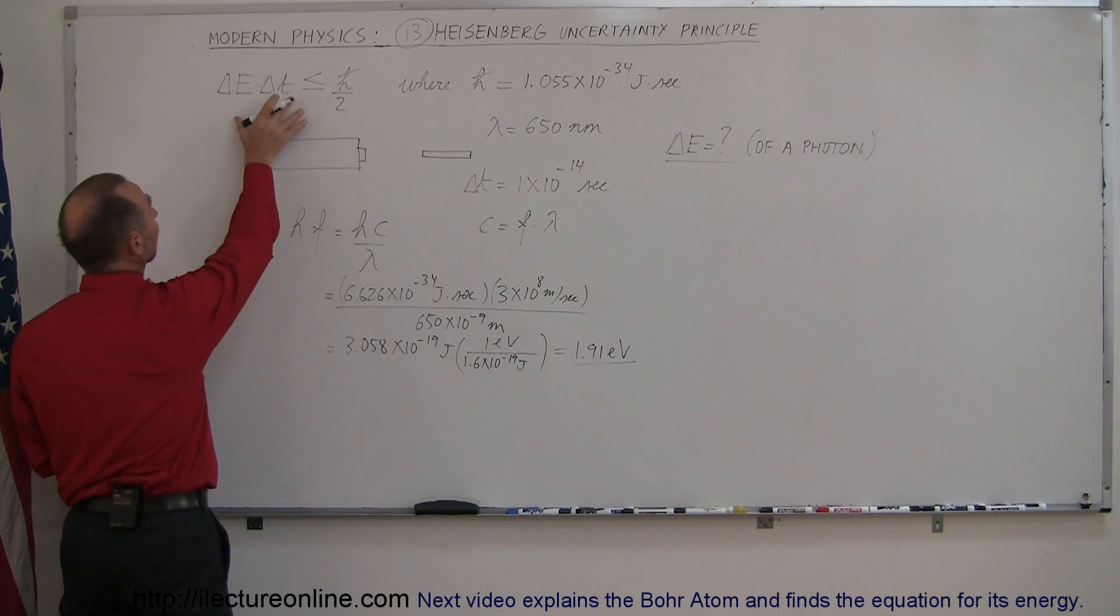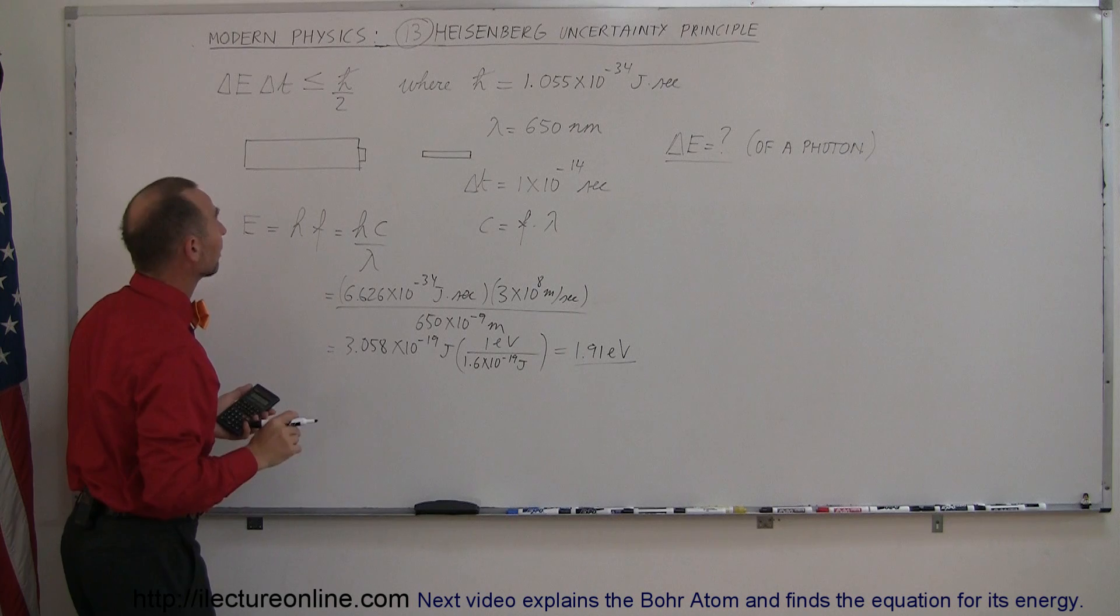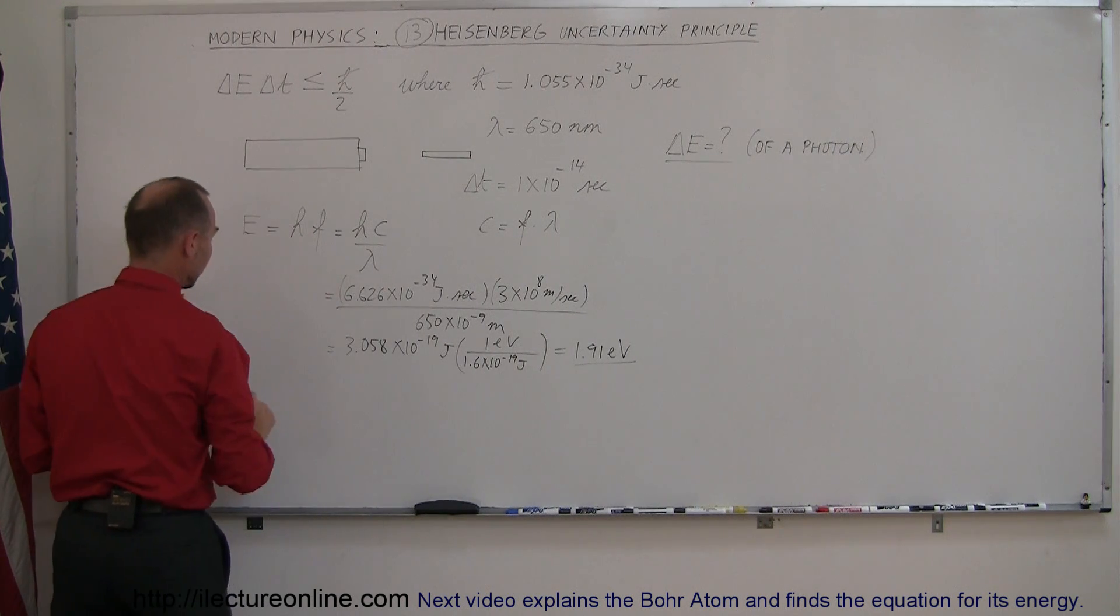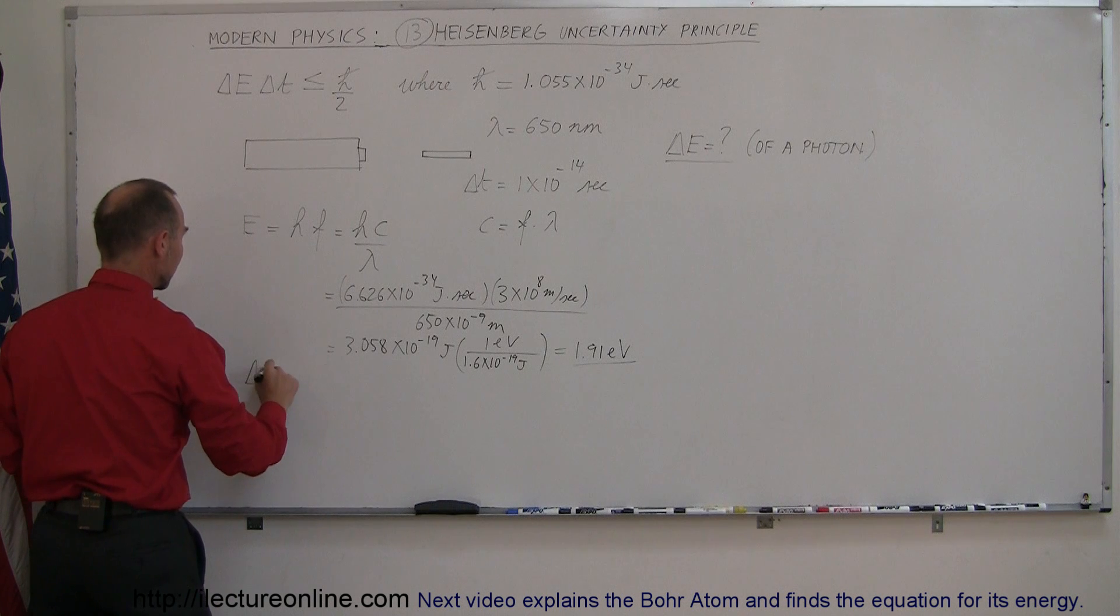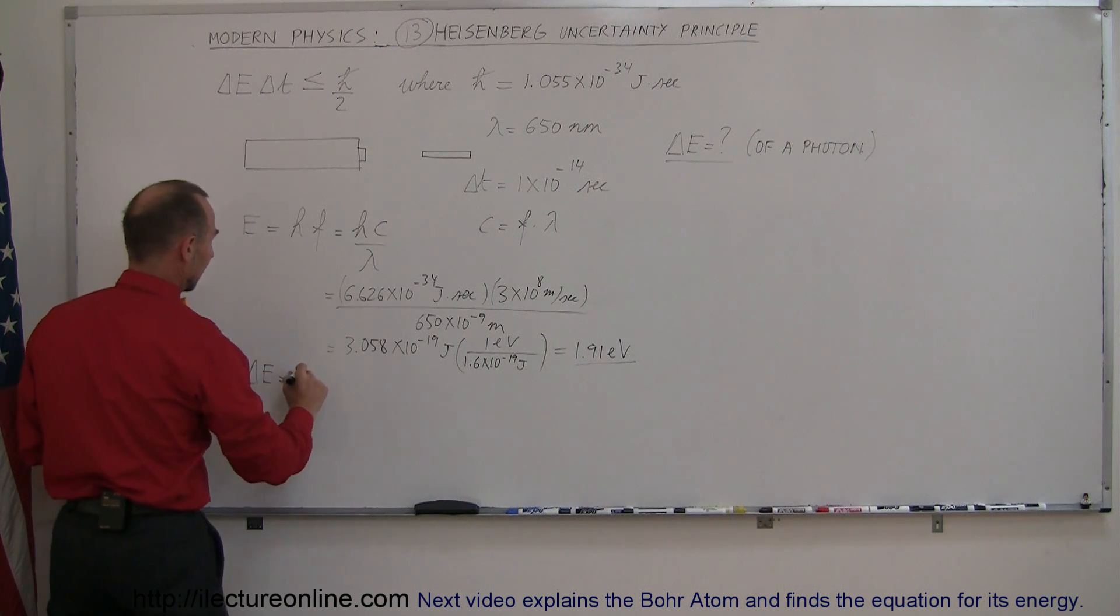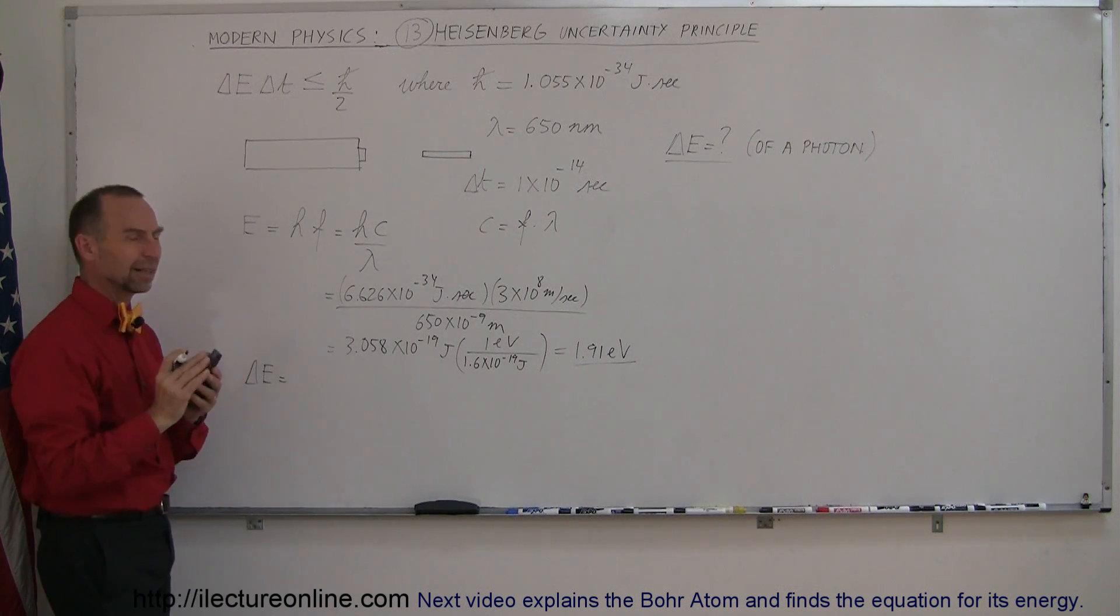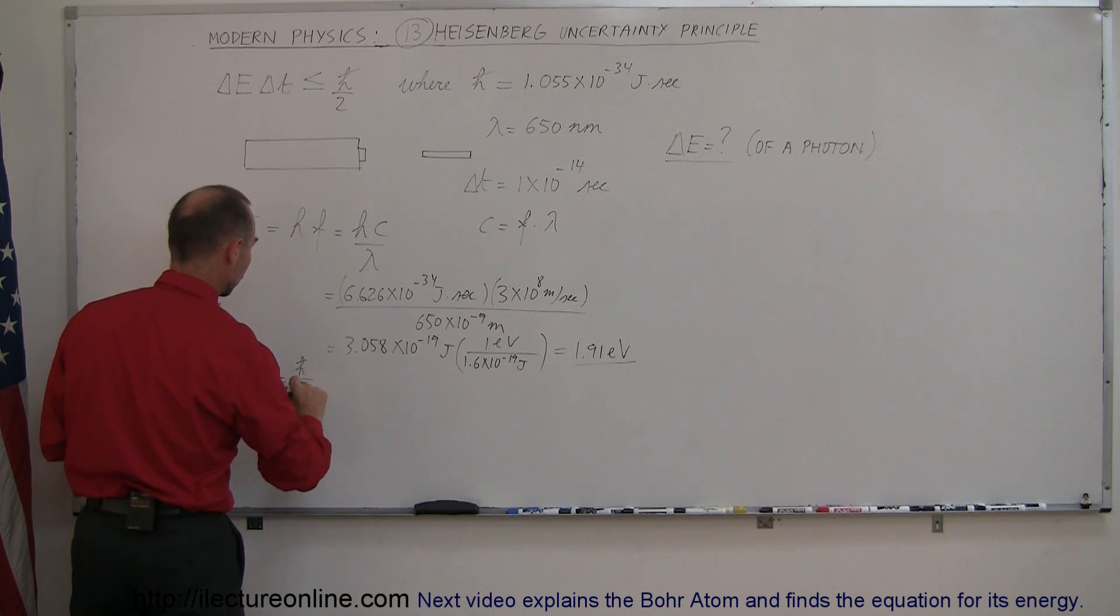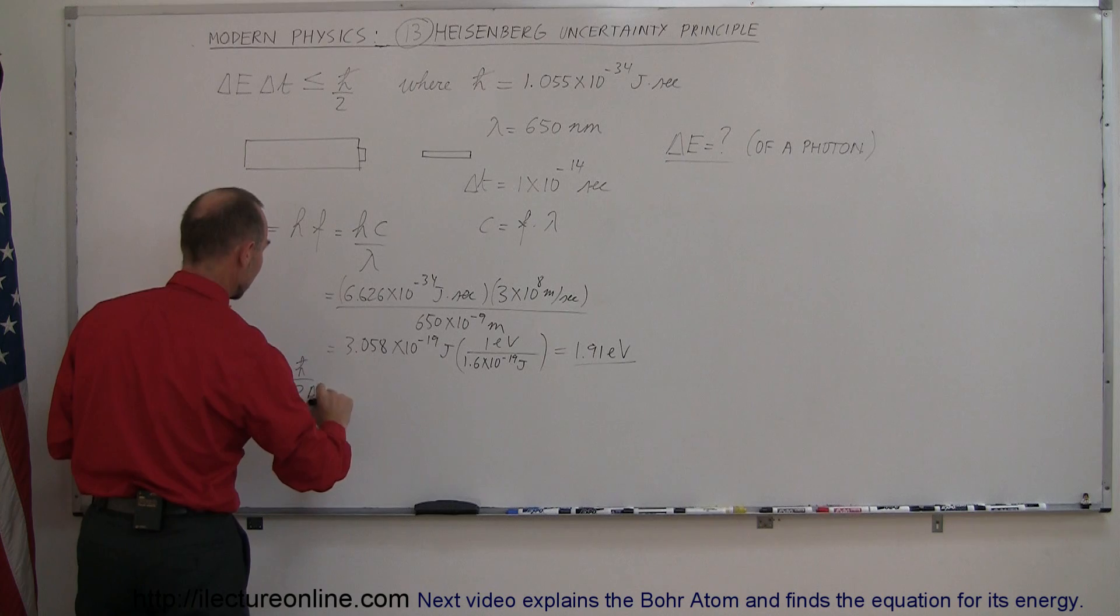And so using the Heisenberg uncertainty principle equation for energy and time, let's solve for the uncertainty in the energy. We can say that the uncertainty in the energy is equal to ℏ over 2 times the uncertainty in the time.